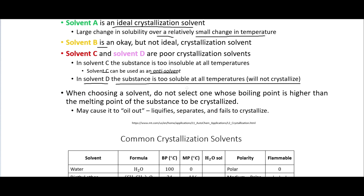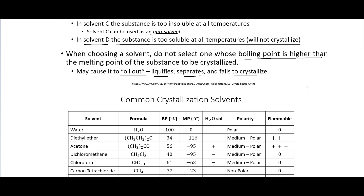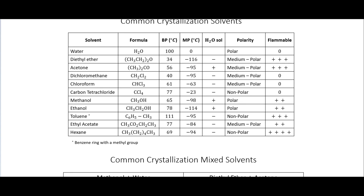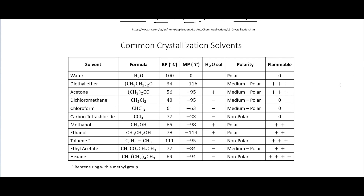When choosing a solvent, do not select one whose boiling point is higher than the melting point of the substance to be crystallized, because this can cause what they call oiling out — it liquefies, separates, and fails to crystallize. Common crystallization solvents include water, diethyl ether, acetone, various carbon-chlorine compounds, methanol, ethanol, toluene, ethyl acetate, and hexane.